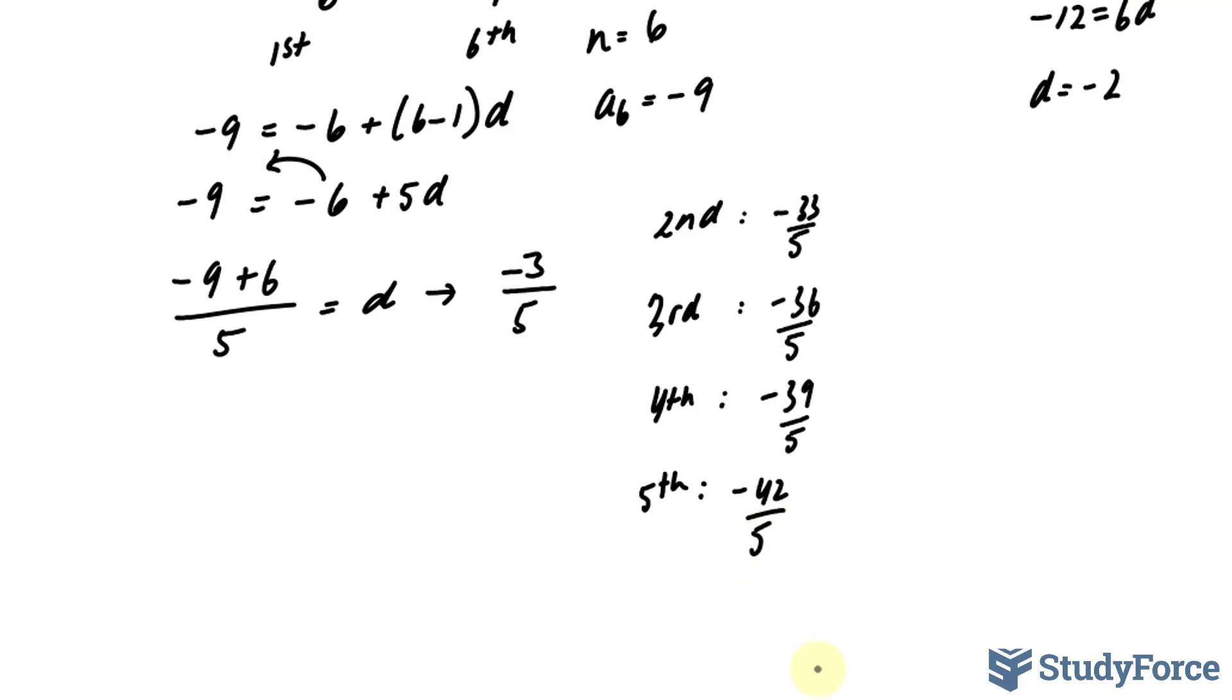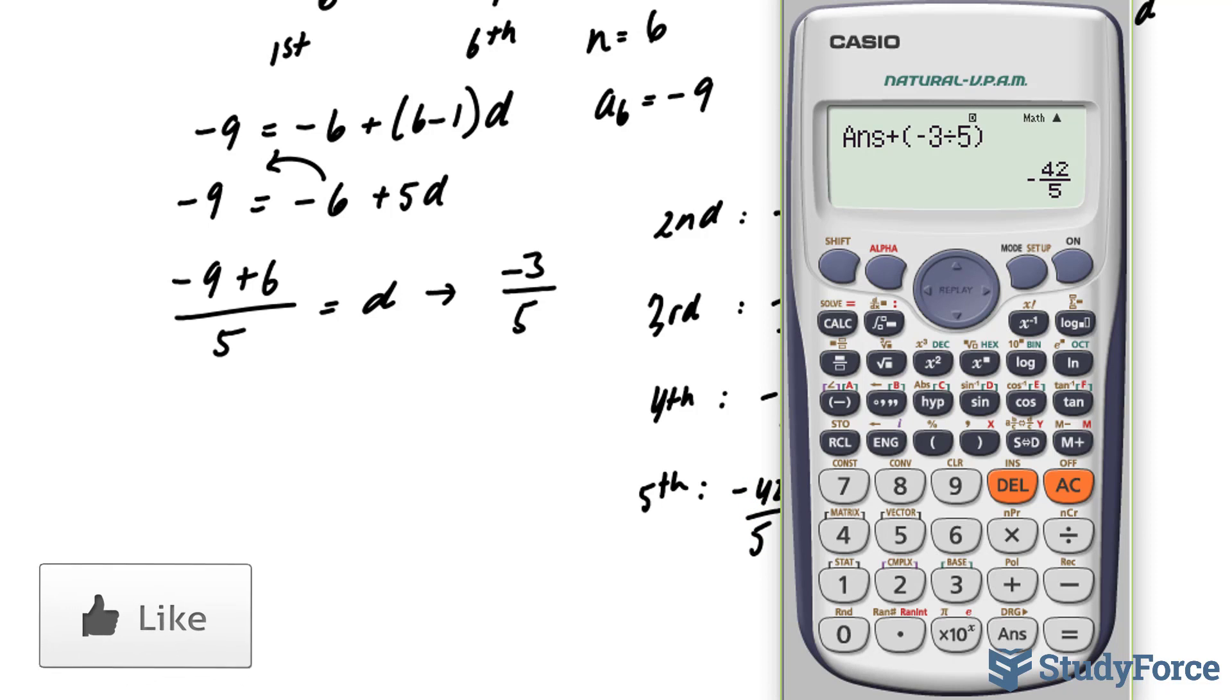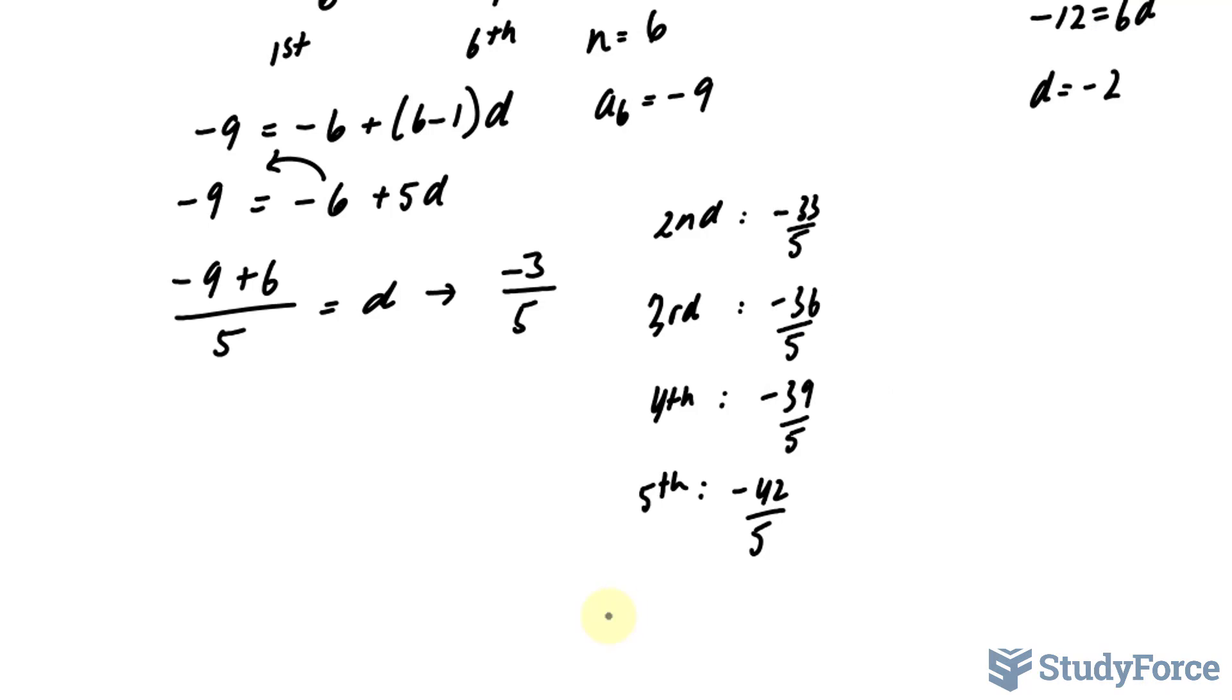And just for good measure, I'm going to add one more negative 3 over 5 just to see if I get 9. So adding another negative 3 over 5, and this will ensure I did it correctly, and I did do it correctly. And so these represent the answers to question 2.